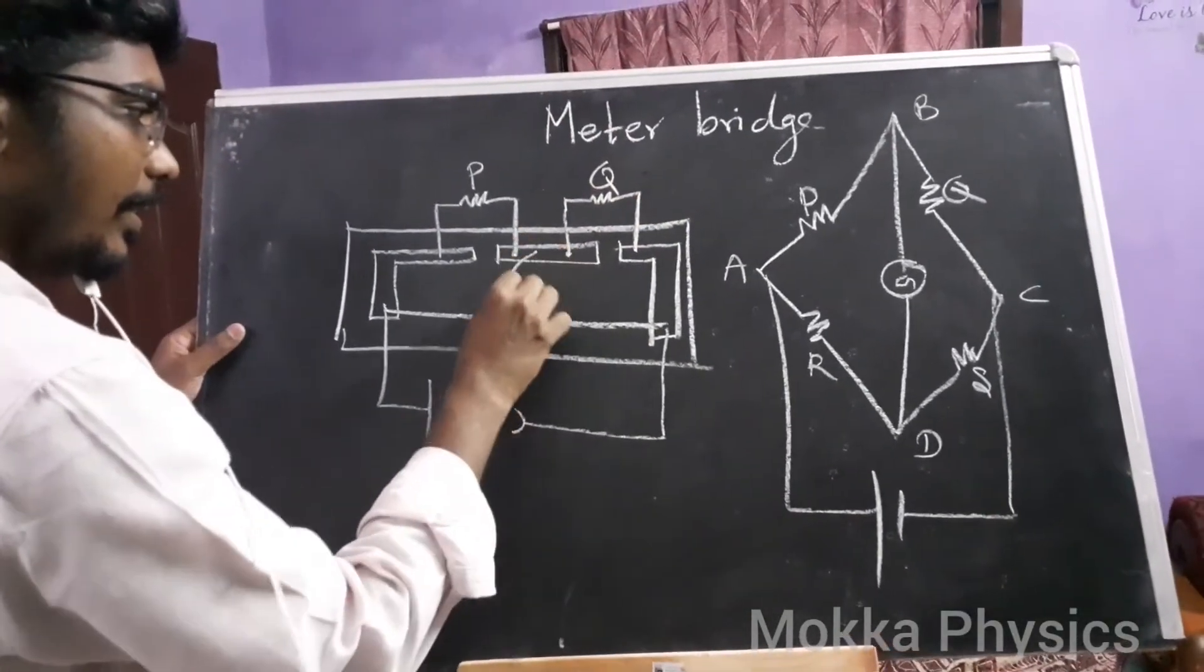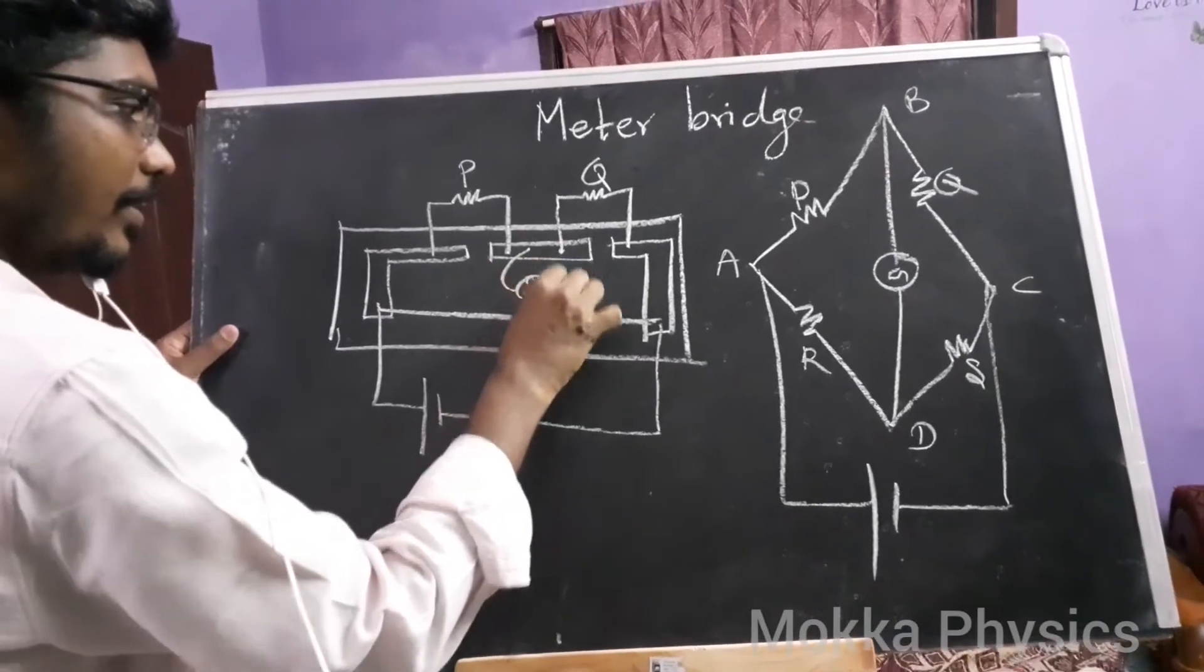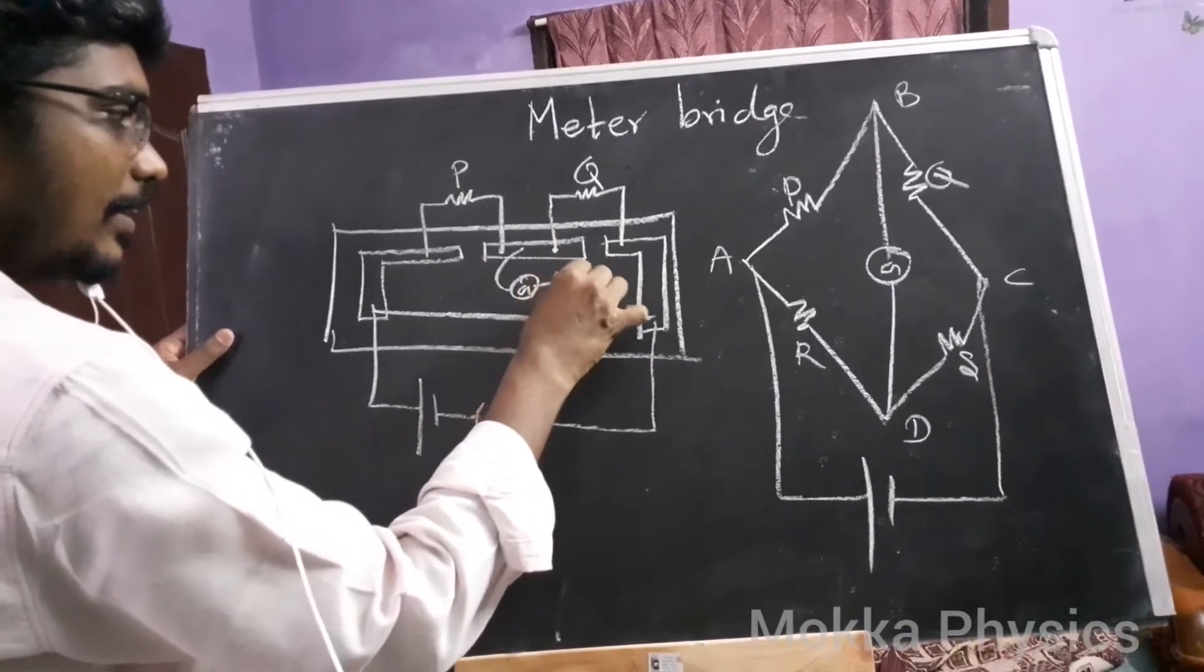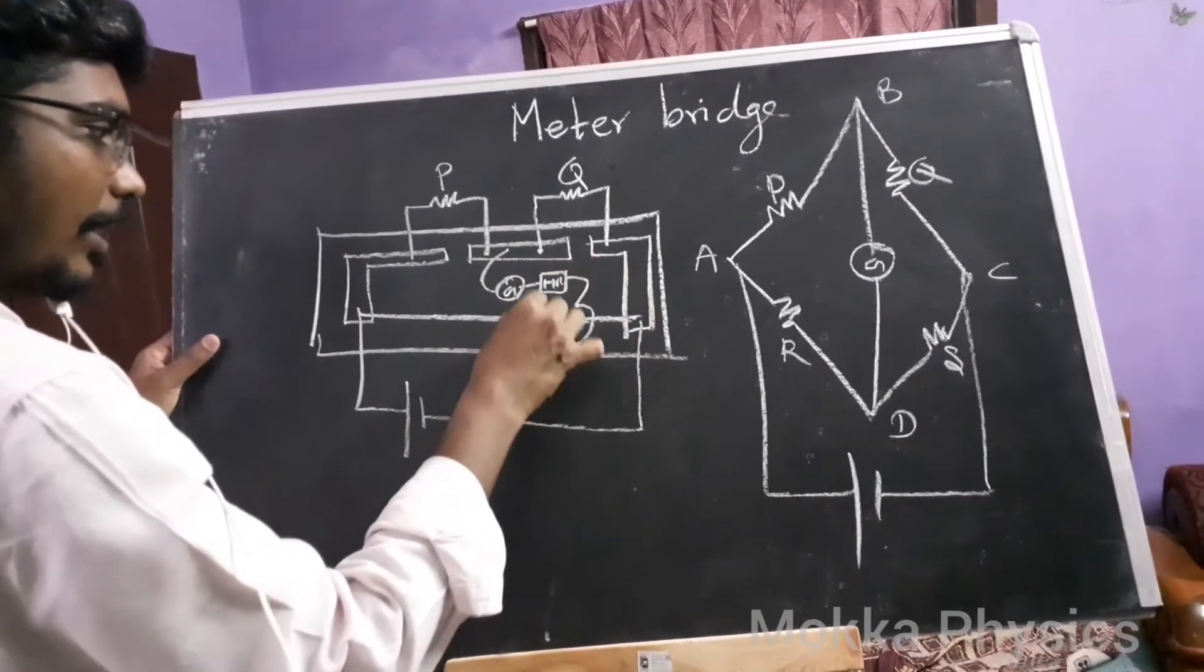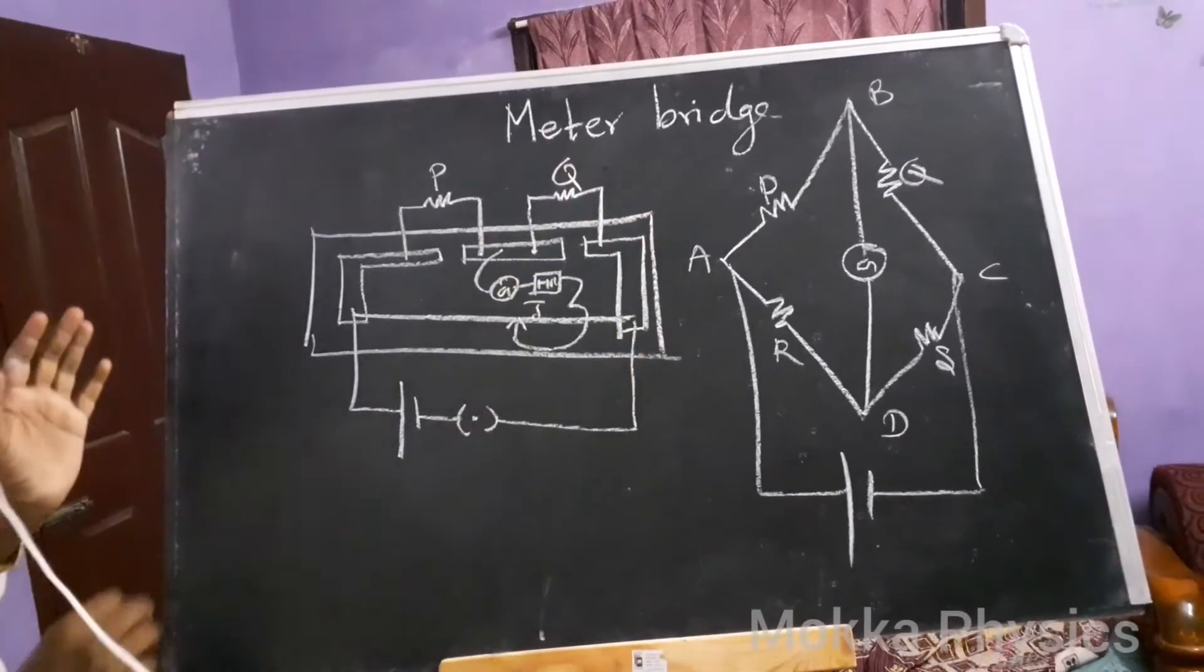In the midpoint, a galvanometer, a high resistance, and connect with the jockey. Now let's connect the circuit over.